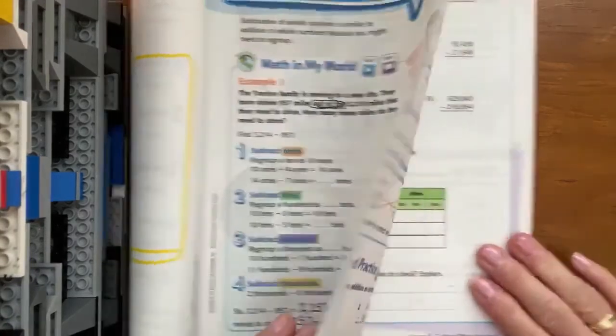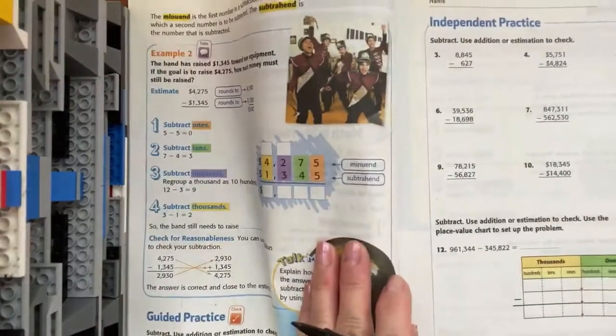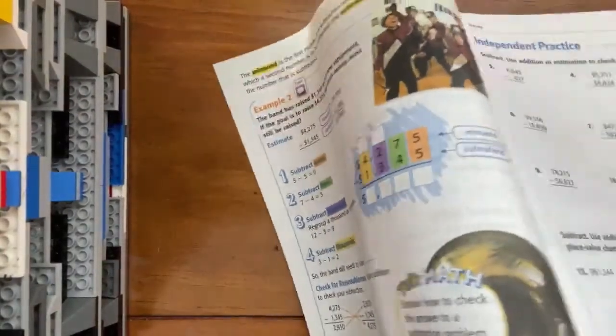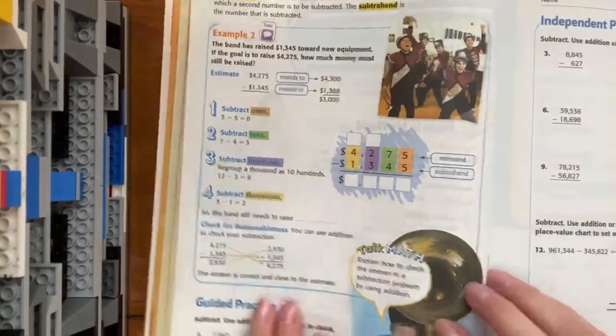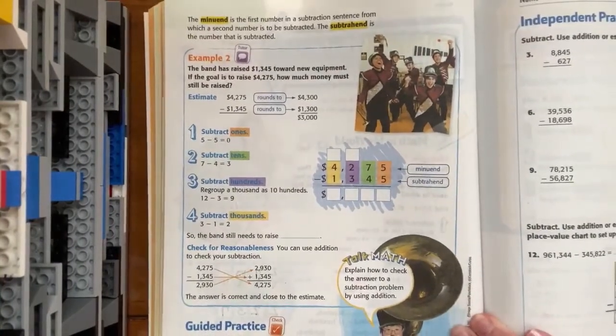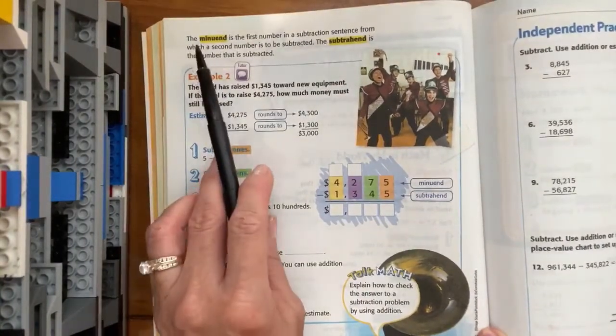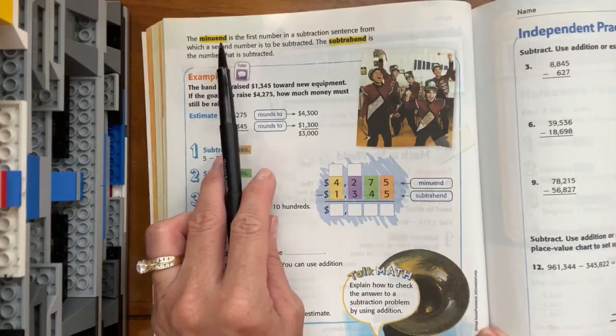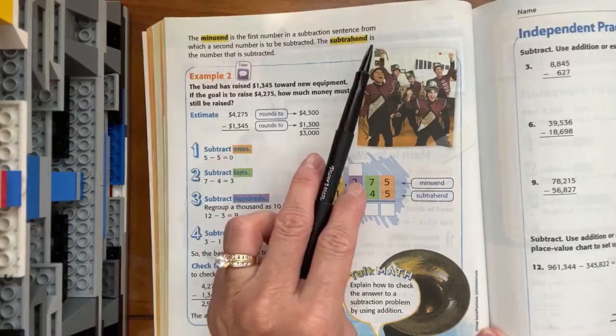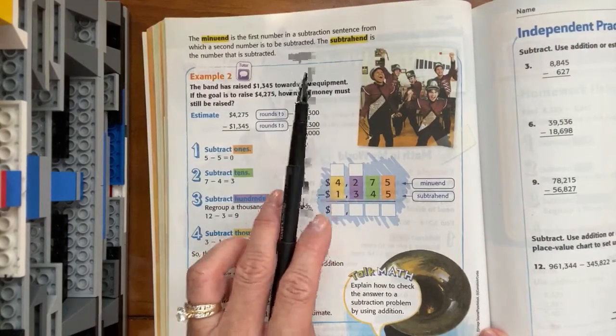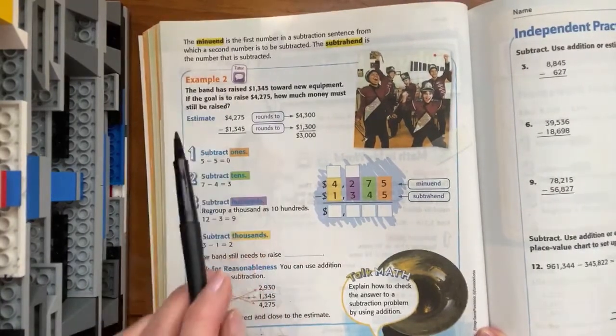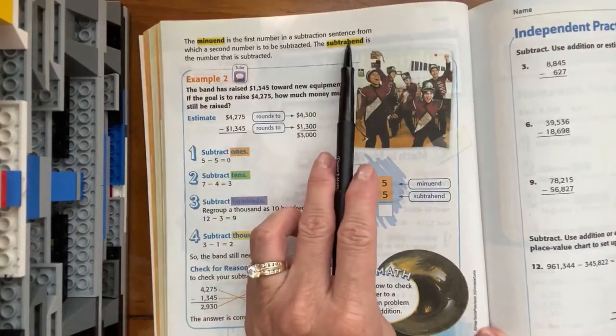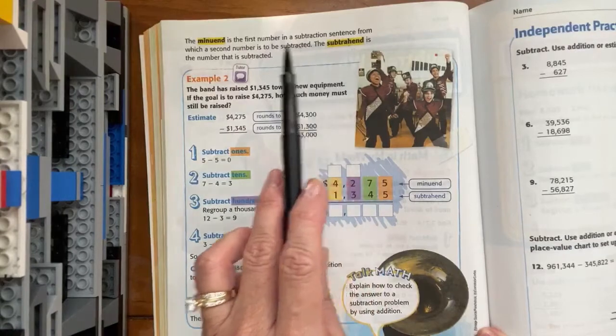Let's look at example two. Here in example two, they give you a couple of vocabulary words, the minuend and the subtrahend. And the minuend is the first number in a subtraction problem. And the subtrahend is the one that comes out of that first number.